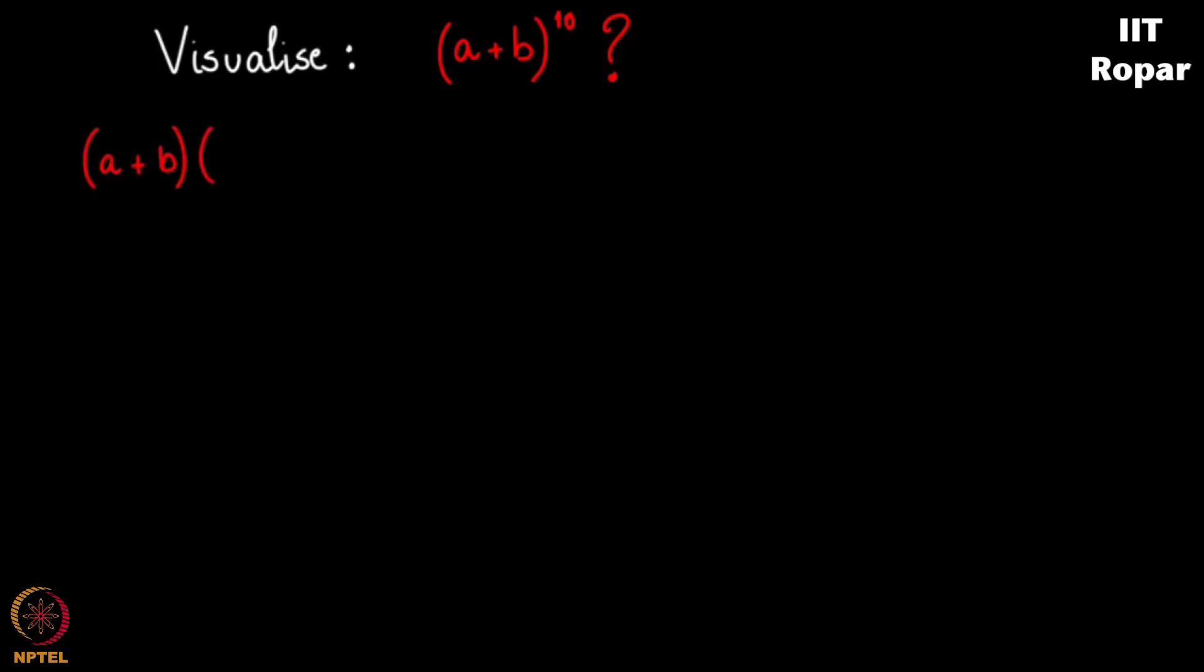Let me observe this carefully as always. You have a plus b, a plus b 10 times. How on earth will I get a to the 10 here? I will only get it in one way. Why? In individual cells, all these cells, if you pick a, a, a, a without picking a b anywhere, you will end up having a to the 10. Now you have only one way to do that.